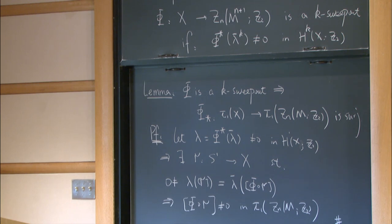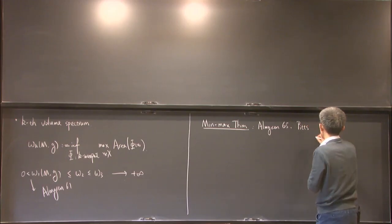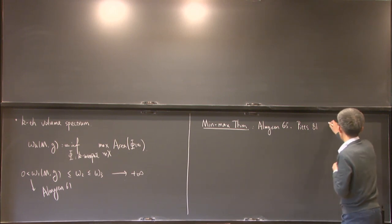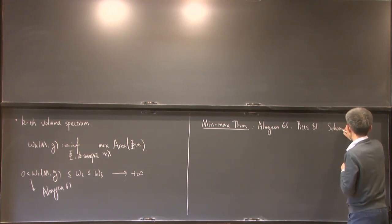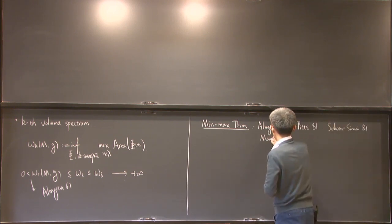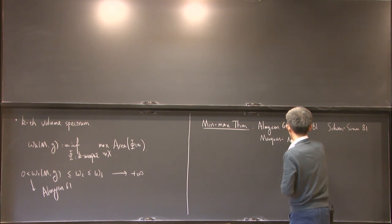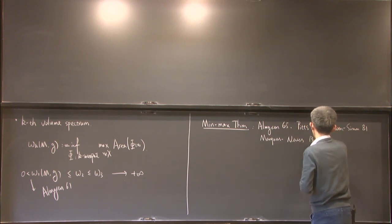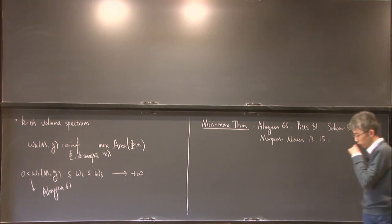The idea is to try to realize this sequence of numbers by minimal surfaces via the min-max. This is due to Almgren for the weak solution in '65, in dimensions between 3 and 6 by Pitts in '81, and Schoen–Simon in '81 for higher dimensions.